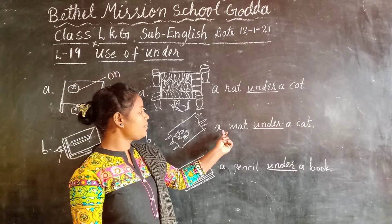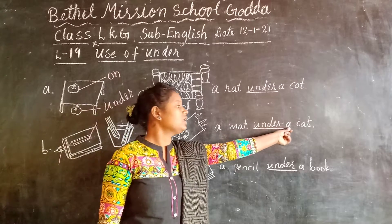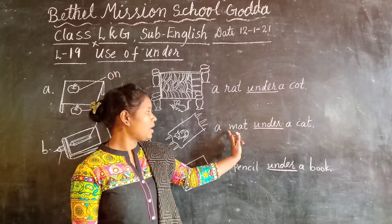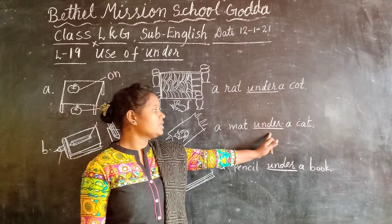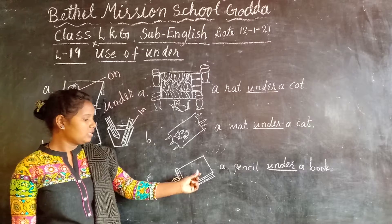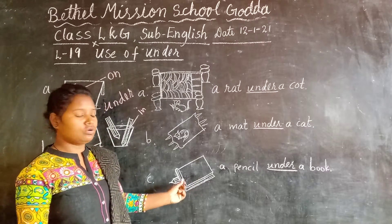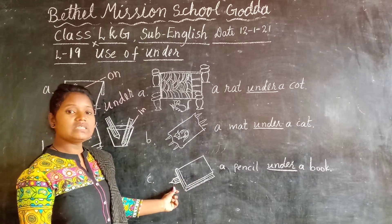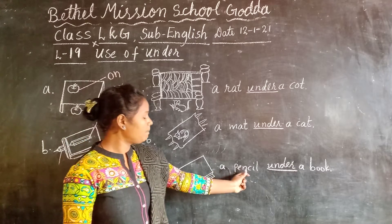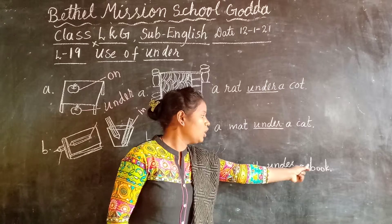So our sentence will be: a mat under a cat. Third one — a pencil under a book. Where is the pencil? Pencil is under the book. So a pencil under a book.